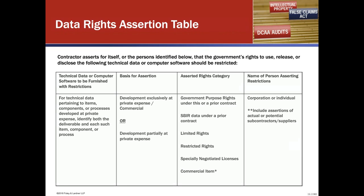In terms of basis for assertion, it's either developed exclusively at private expense, developed in whole or in part at government expense — so if it's going to be developed with mixed funding, that's where government purpose rights come into play — and then the name of the person asserting restrictions, which is either the corporation or the individual. You need to make sure that as a prime contractor, you are getting these from your subcontractors. If you do not, the government is going to assume they get an unlimited rights license in all technical data and computer software, whether it is from you or your subcontractors.